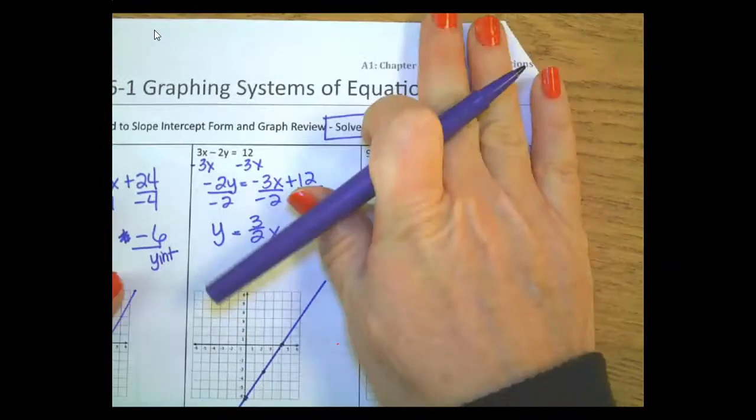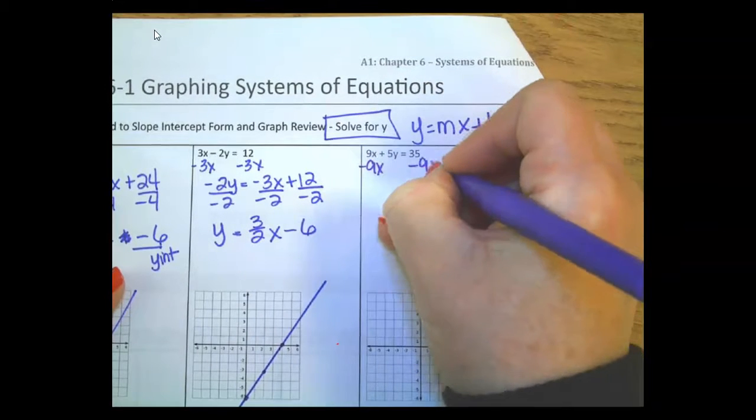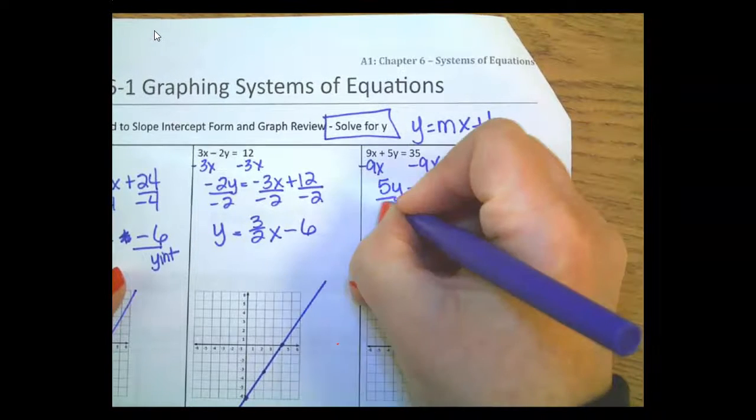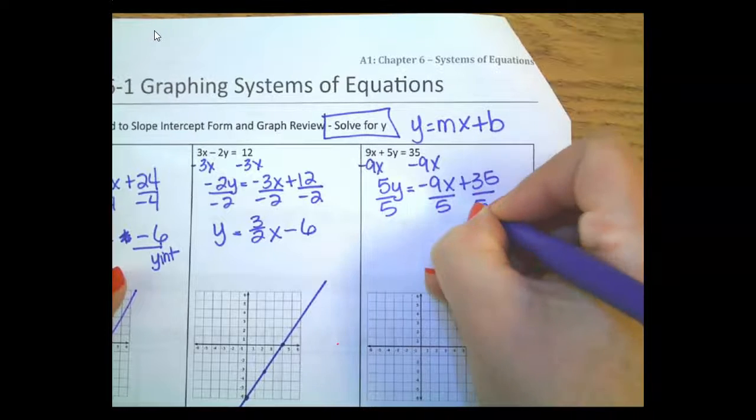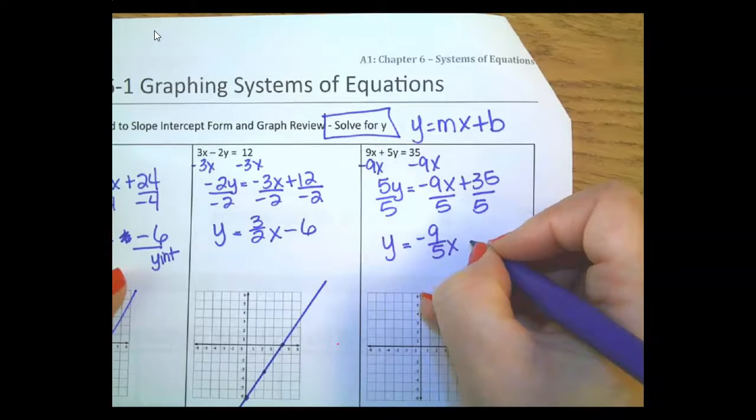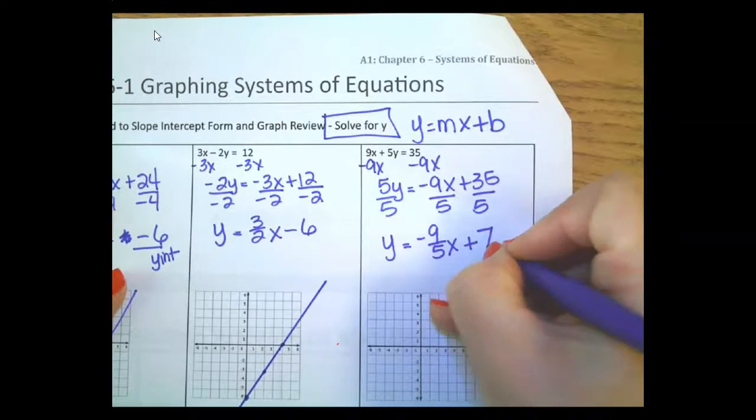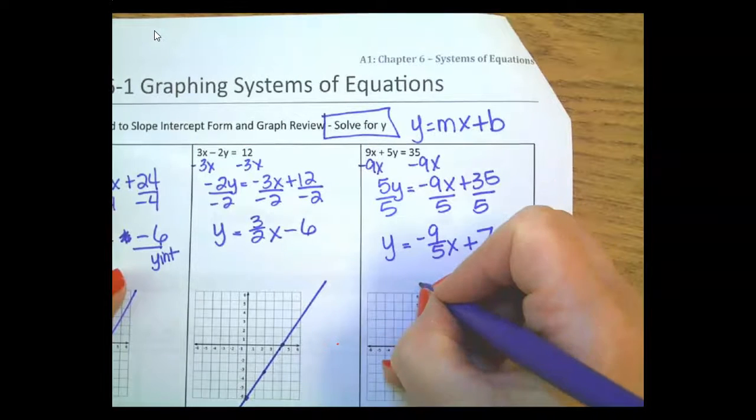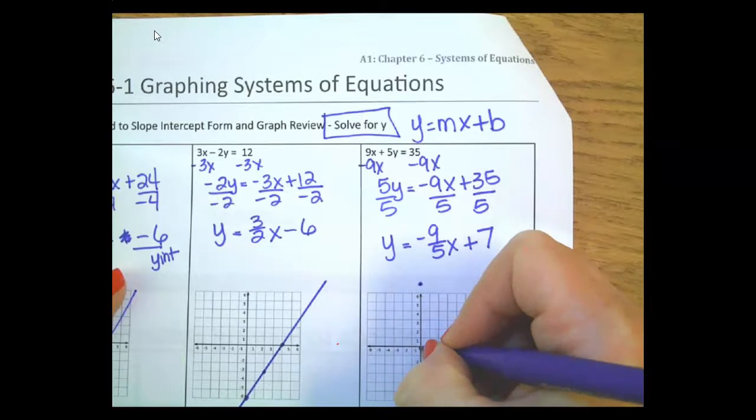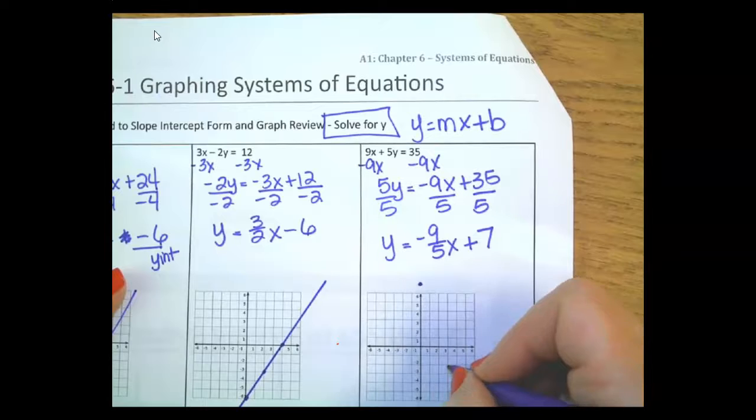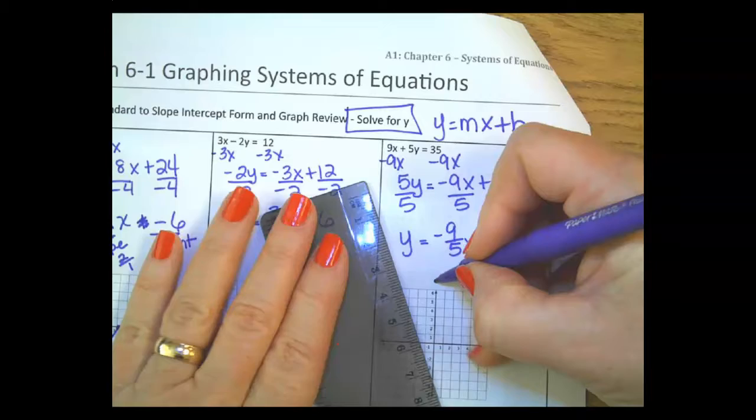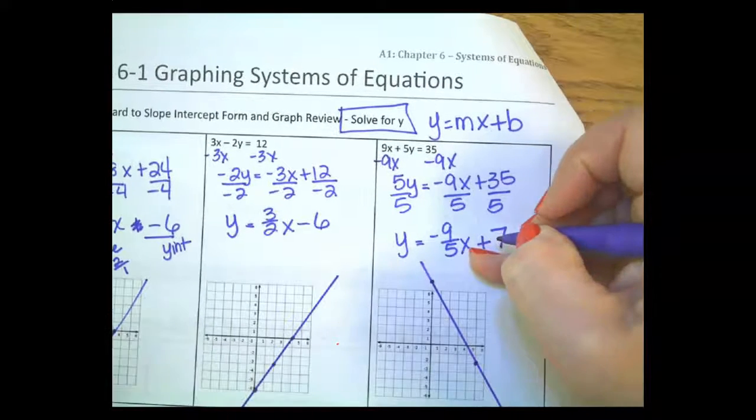All right. Last one. Subtract my 9X. 5Y is equal to negative 9X plus 35. Divide everything by 5. Y is equal to negative 9 fifths. Again, that is okay. This divided by this is 7. So I'm just going to put it here. Down 9. So 1, 2, 3, 4, 5, 6, 7, 8, 9 over 5. And that is it.